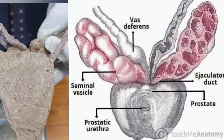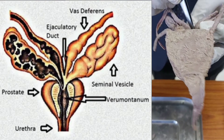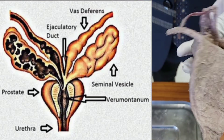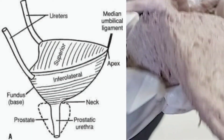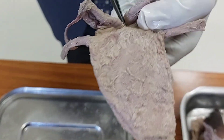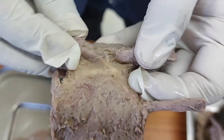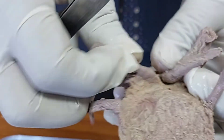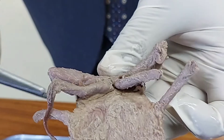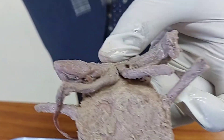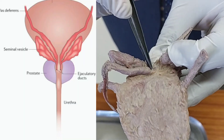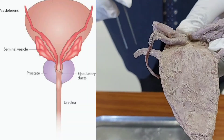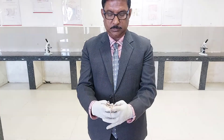The capacity of the seminal vesicle is about 13 milliliters. The duct of the seminal vesicle and the ampulla of the vas deferens join together to form the ejaculatory duct. The ejaculatory duct is about 2 centimeters in length and opens inside the prostatic urethra at the level of the verumontanum. Inside the prostate, the urethra runs as the prostatic urethra, and on the posterior wall you find the openings of the ejaculatory duct on both sides. The total length of the vas deferens is about 45 centimeters. There are two ejaculatory ducts — one from the right and one from the left — opening into the prostatic urethra at the level of the verumontanum.